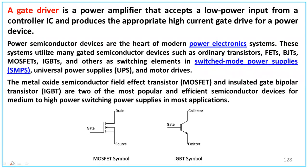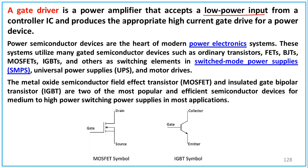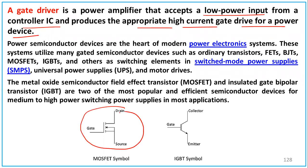A gate driver is actually a power amplifier that accepts a low power input from a controller IC and produces appropriate high current gate drive for a power device. So the gate driver takes a low power input from a controller IC and uses it to switch the MOSFET on or off.